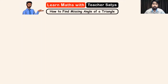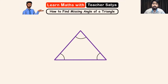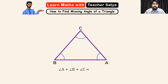Now before we find the missing angle of a triangle, let's understand some of its properties. A triangle is made up of three angles and the sum of all of these three angles will be equal to 180 degrees. What this means is angle A plus angle B plus angle C will equal to 180 degrees.